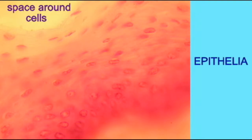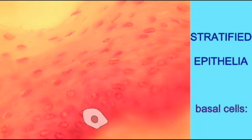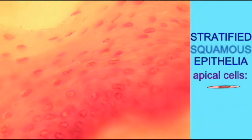This human epithelia from the oral cavity is classified as stratified squamous epithelia. It is stratified, meaning that there are many layers, and the apical cells — the cells which face the lumen of the oral cavity — are squamous. And so, although the basal cells have a different shape, being more cuboidal, the tissue is named for the apical cells: stratified squamous epithelia.